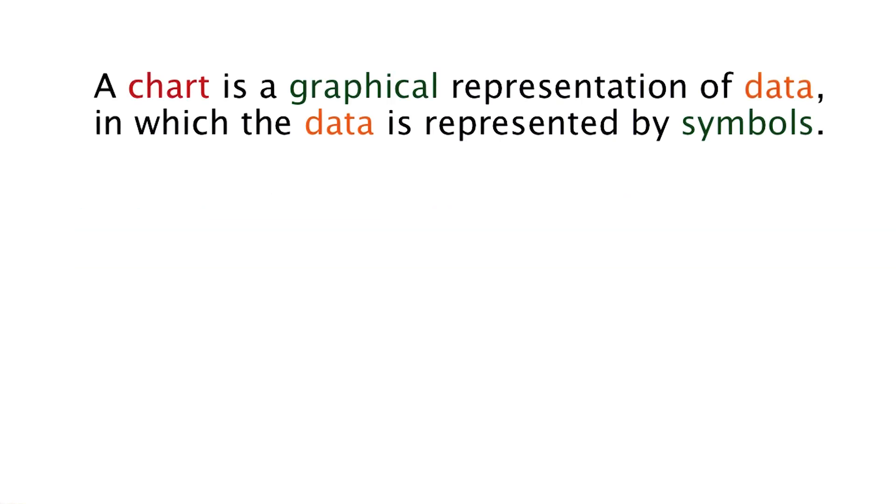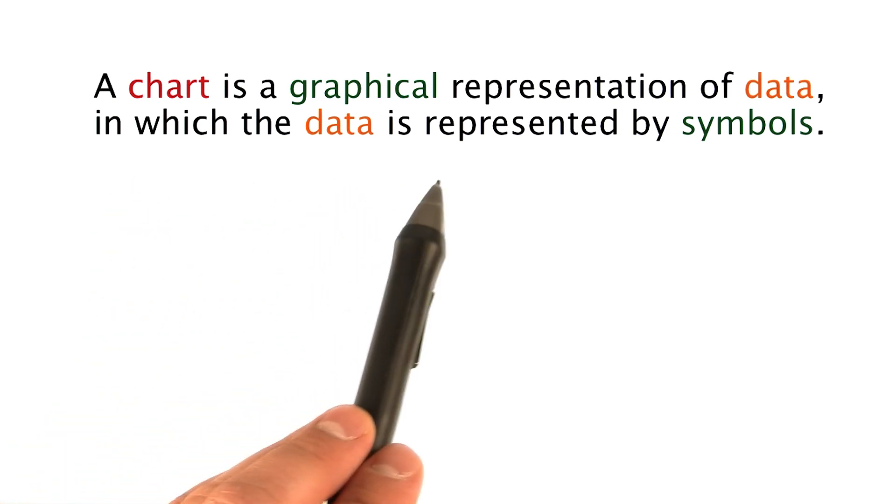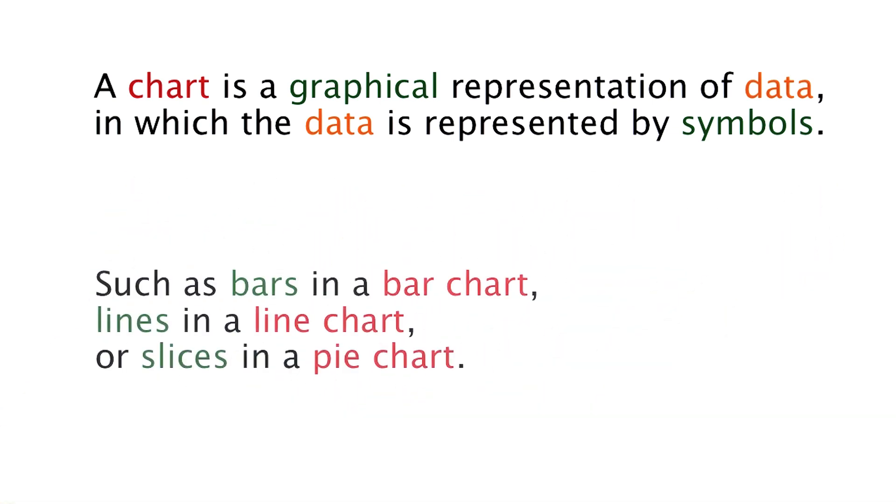Wikipedia defines a chart as a graphical representation of data in which the data is represented by symbols. It then goes on to give examples such as bars in a bar chart, lines in a line chart,